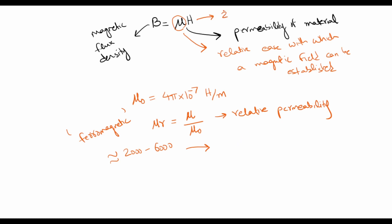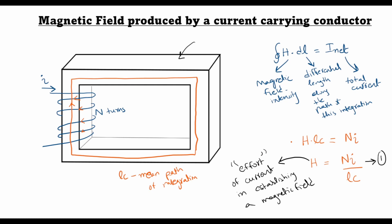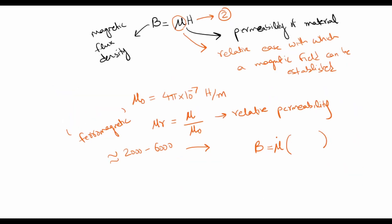So let's call B = mu times H equation 2. If I plug in the value of H from equation 1, I know that H is NI over LC, so B would be mu times NI over LC.